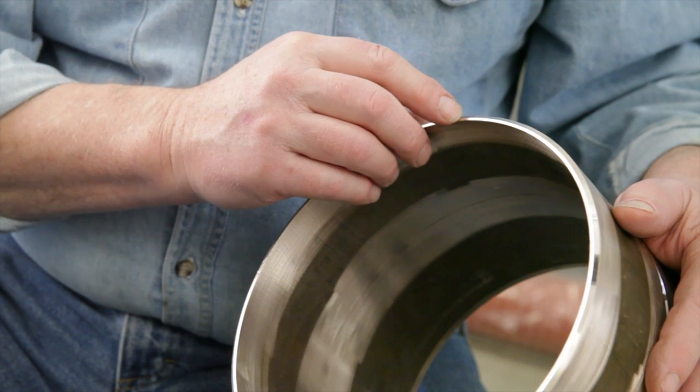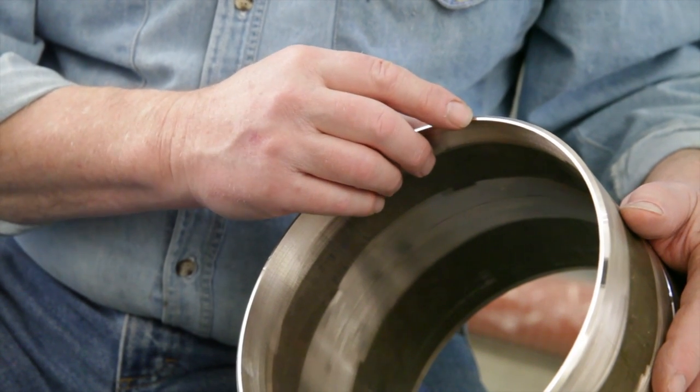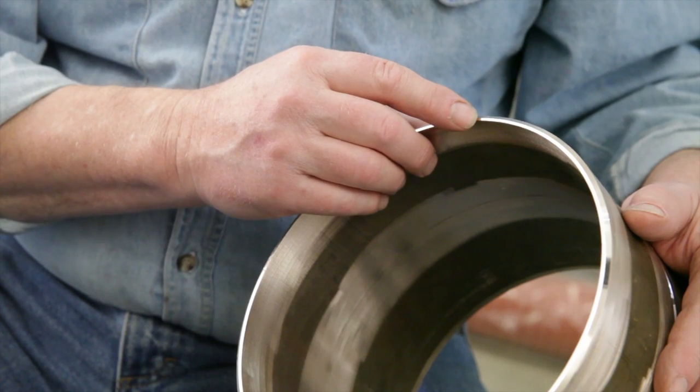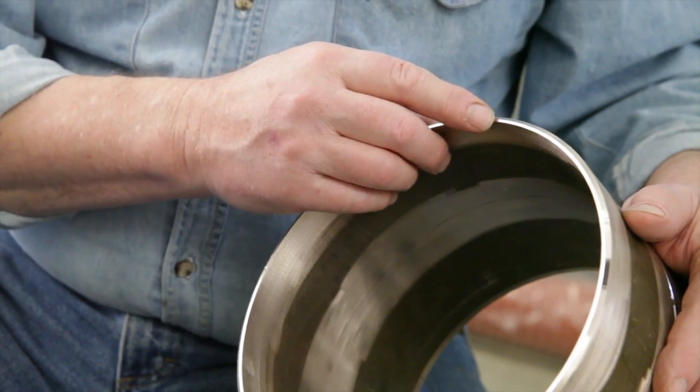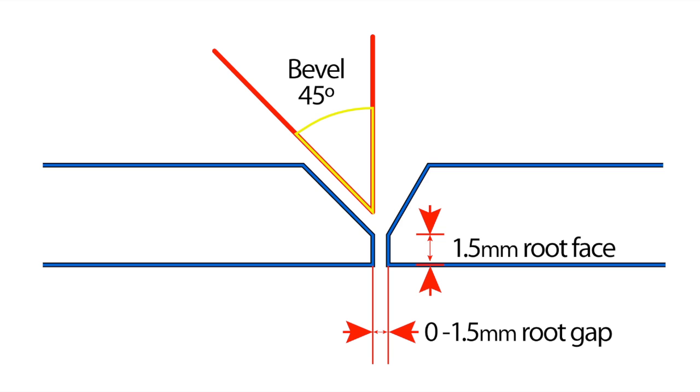Root face can be anywhere from 1.5 to 2.4 millimeters depending on wall thickness and other issues. It is important to have a uniform root face or land, as it is often called, around the pipe circumference for the welder to make a uniform root pass. This is best done by machining and an ID counterbore may be needed to correct pipe that is out of round.